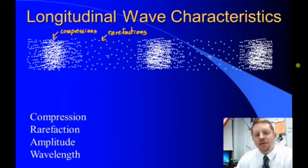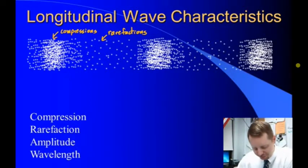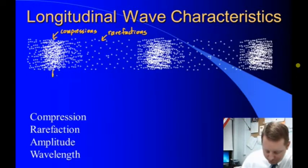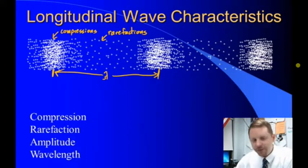Amplitude, again, is related to the energy of the wave. The more amplitude, the more energy there is in the wave. And in this case, it has to do with how dense the compressions are, and how less dense the rarefactions are. Wavelength, we measure the same way. Take the same point on consecutive waves. So we could go from compression to compression in order to find our wavelength. Or you could go from rarefaction to rarefaction. And frequency and period apply here just as they did when we talked about transverse waves.